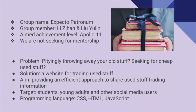Our group name is Experto Patronum and the group members are Zihan and Yuli. Our aimed achievement level is Apollo 11. We found that some students want their old stuff to be reused and some want to buy cheap second-hand items. So we decided to create a website to help them. Our target users are students, young adults, and other social media users. We plan to create this website using CSS, HTML, and JavaScript.